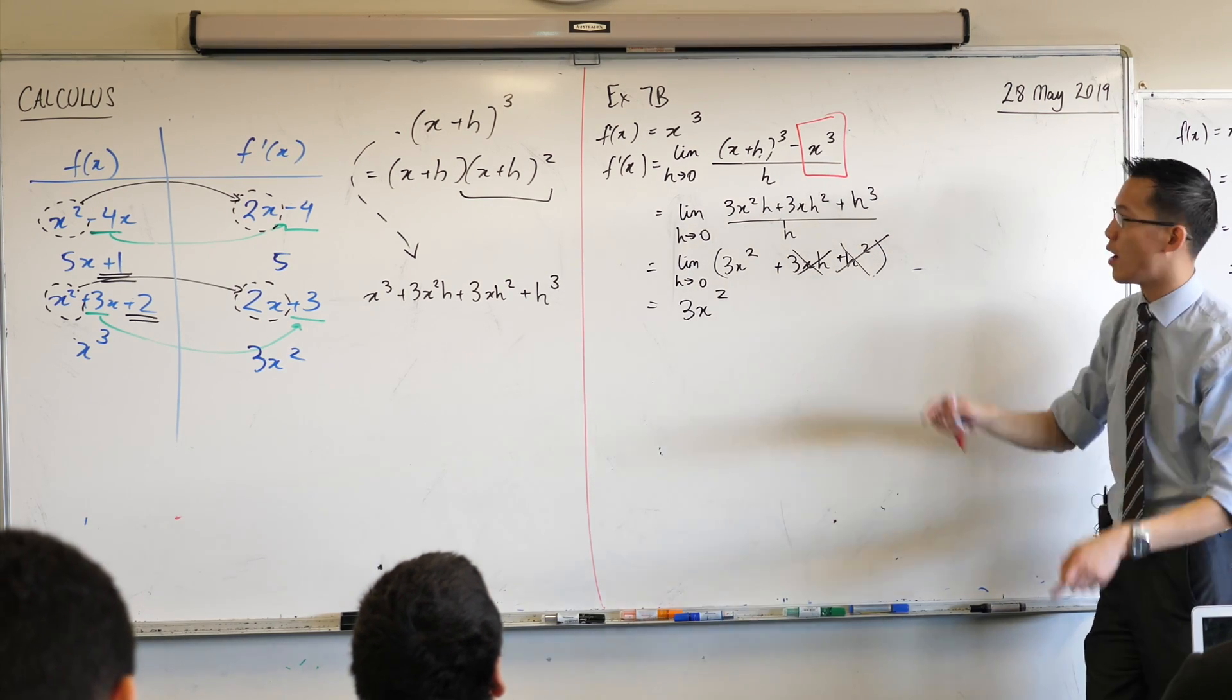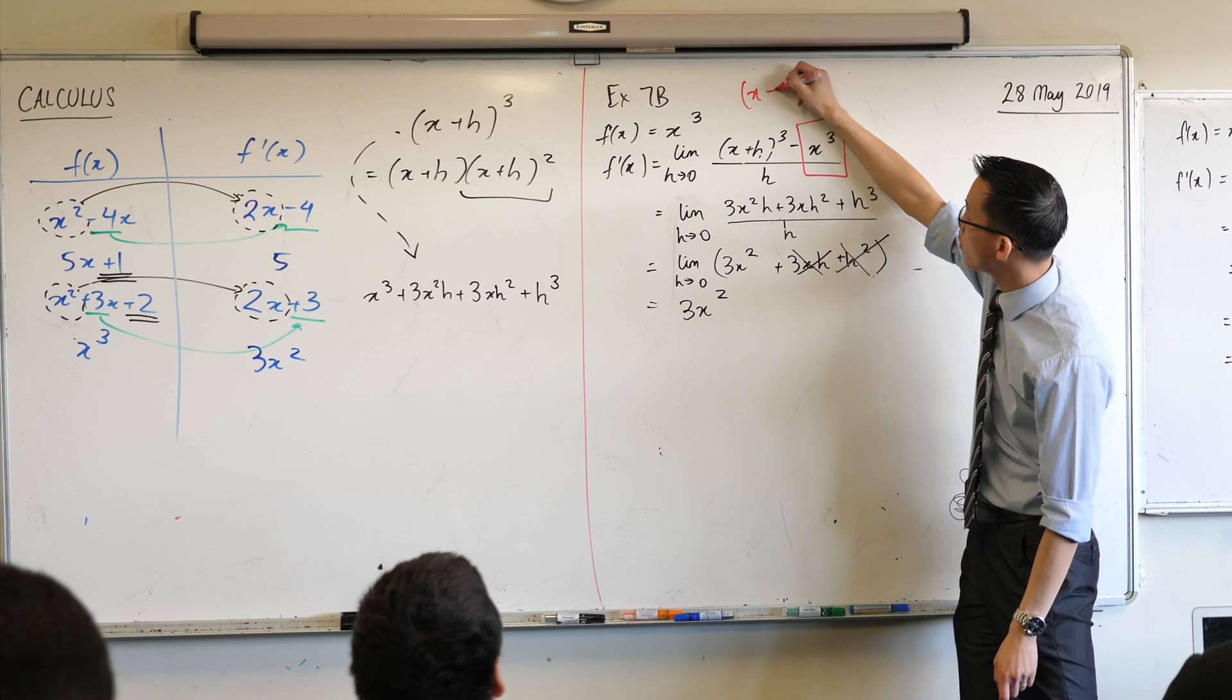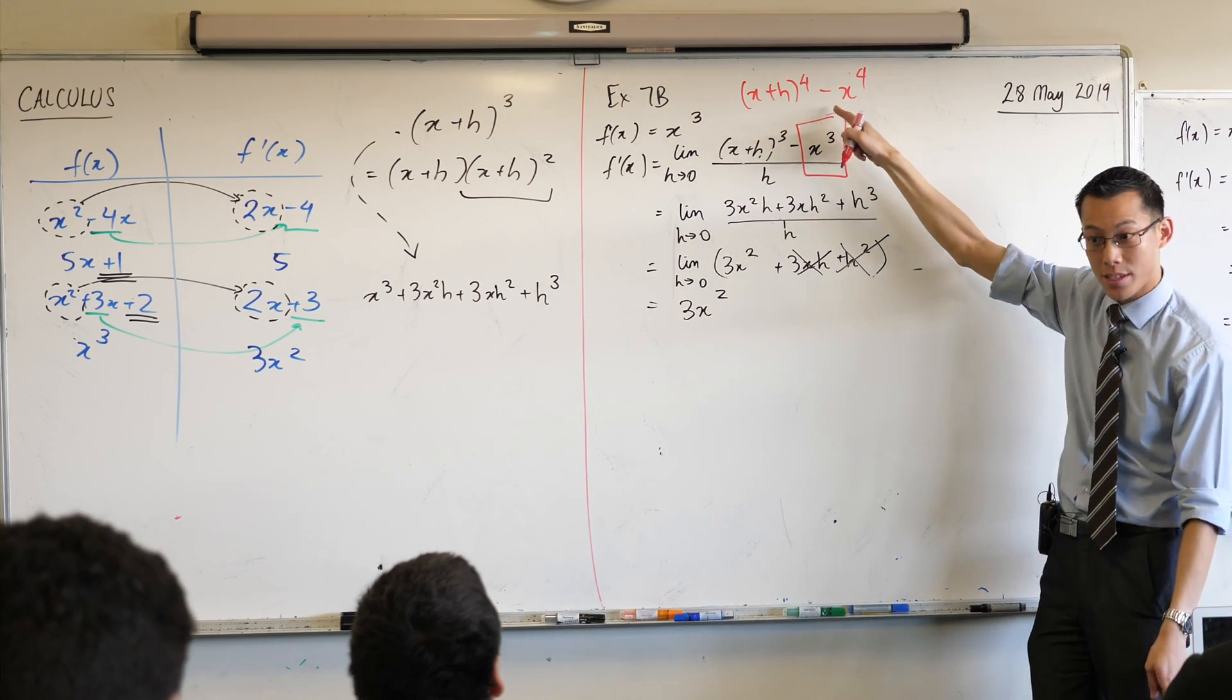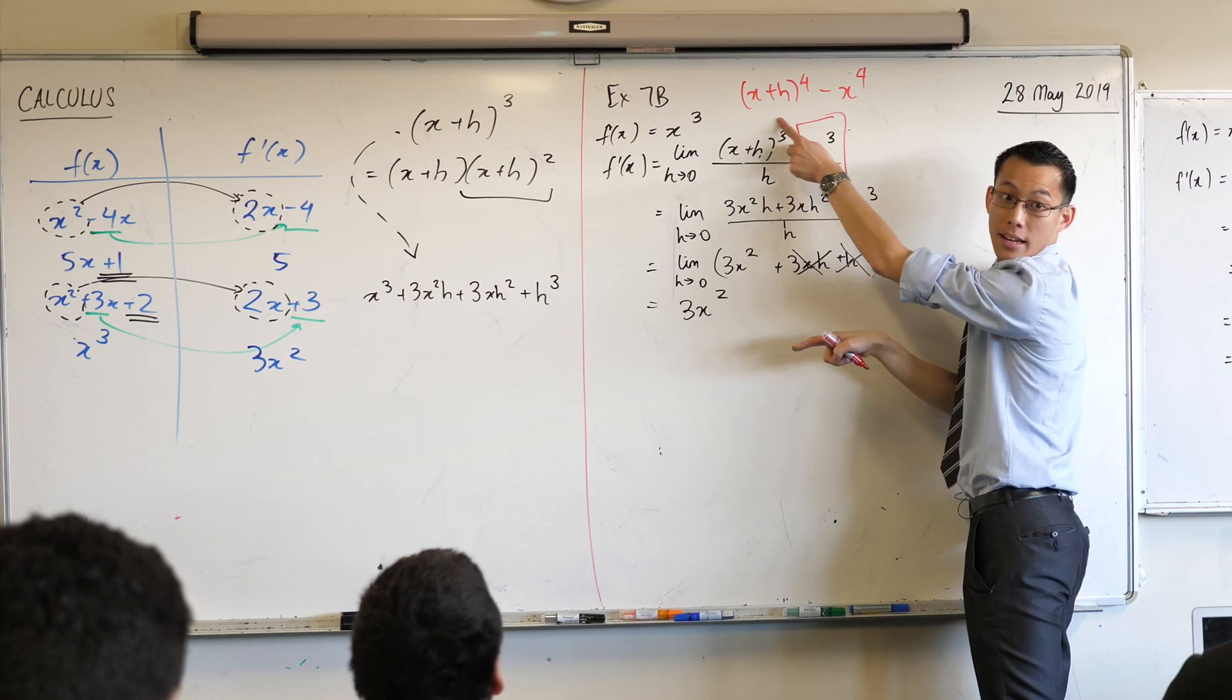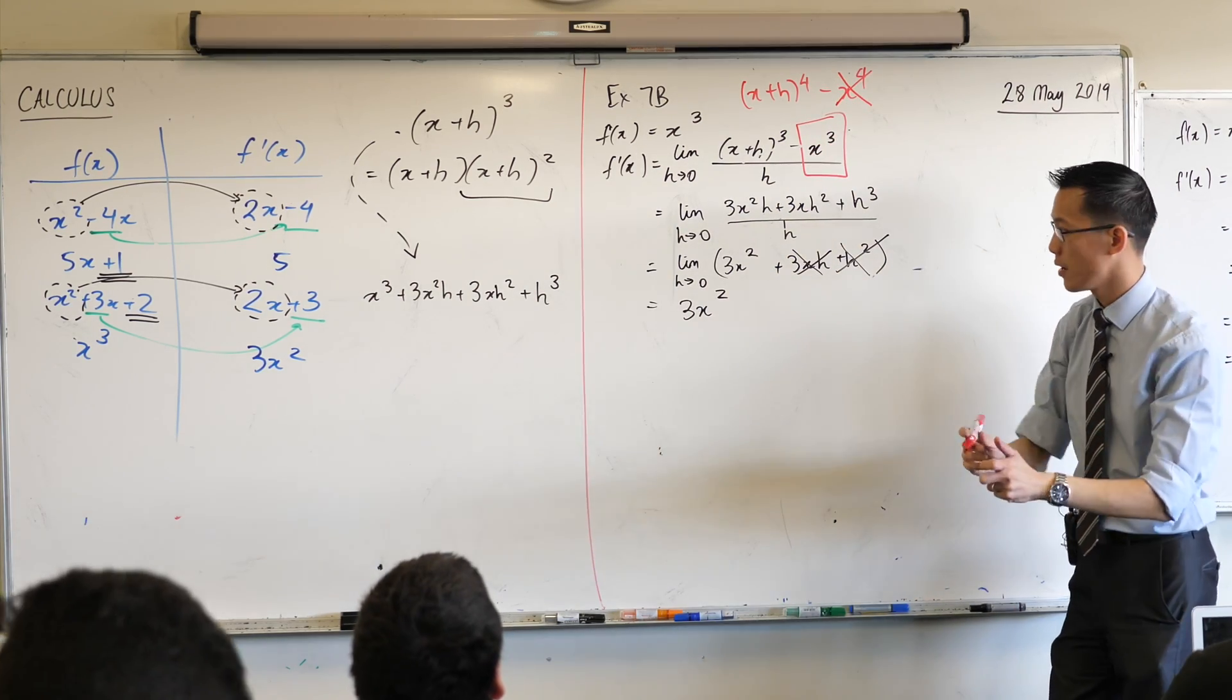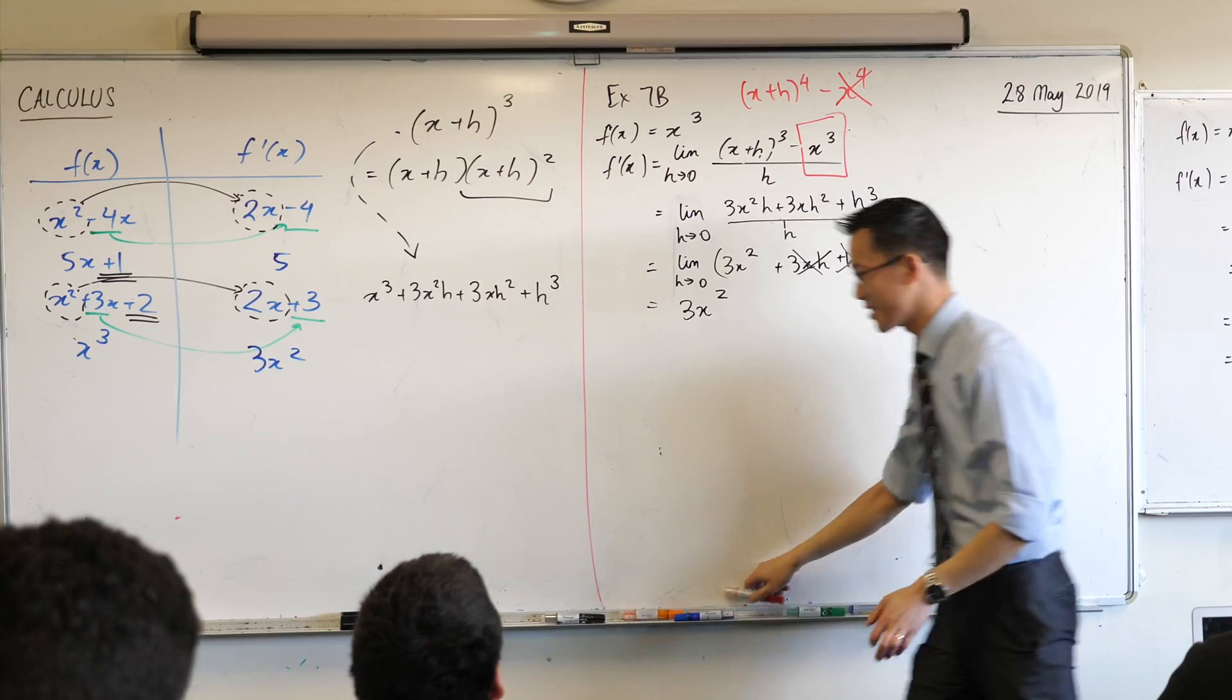I won't make you do the one with x to the power of 4, but look, without even expanding, can you see the x to the 4 term that comes out of here? It's going to go. It's going to get cancelled by that guy. Does that make sense? Now, secondly, let's actually look at this.